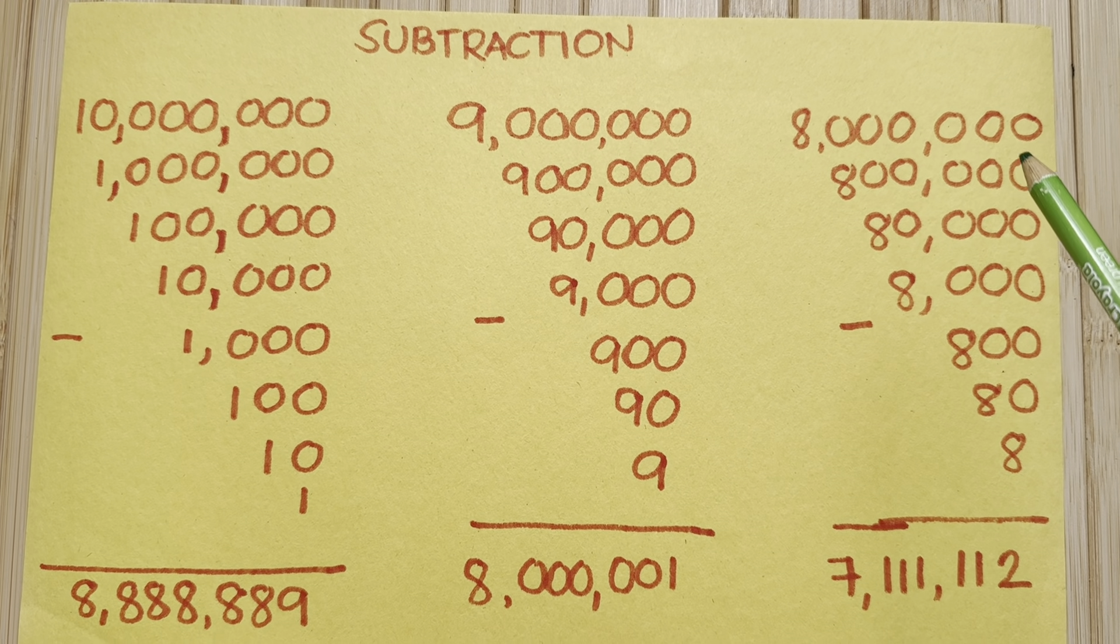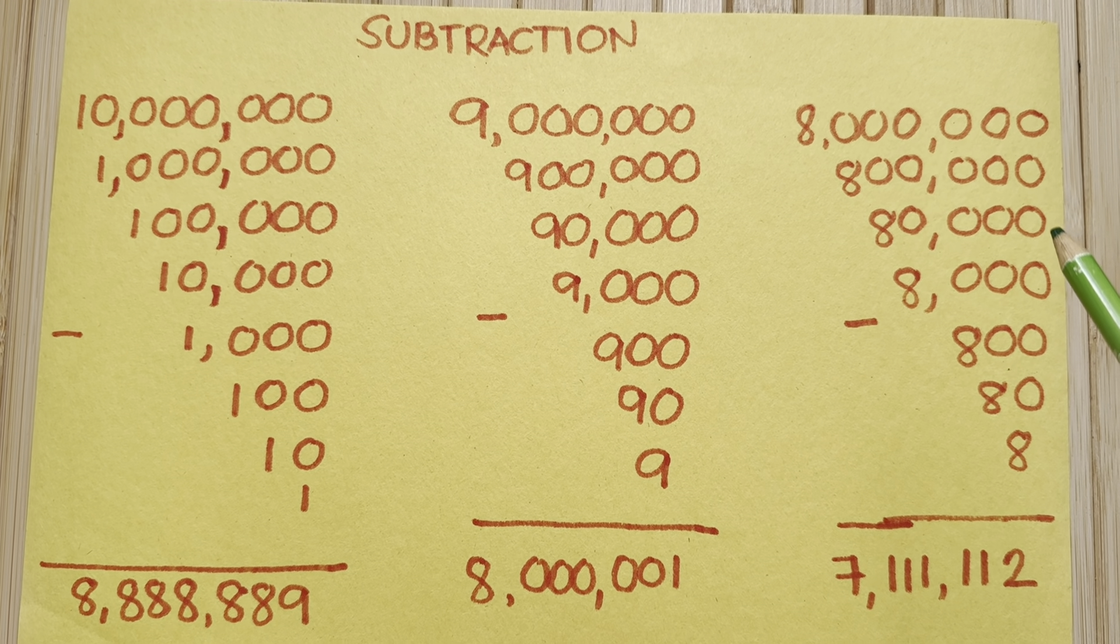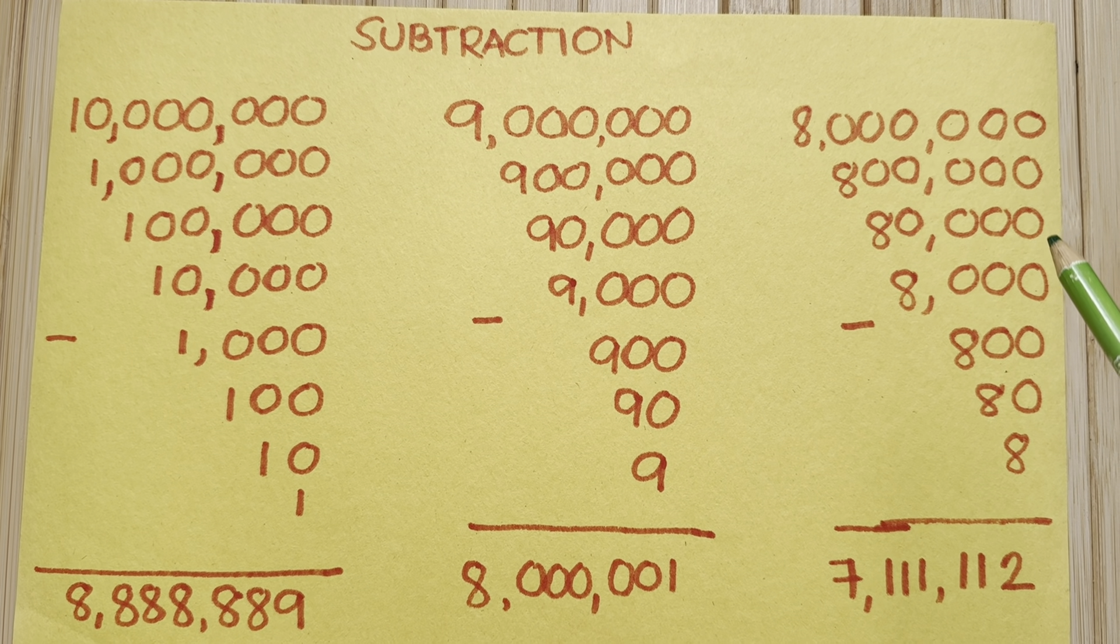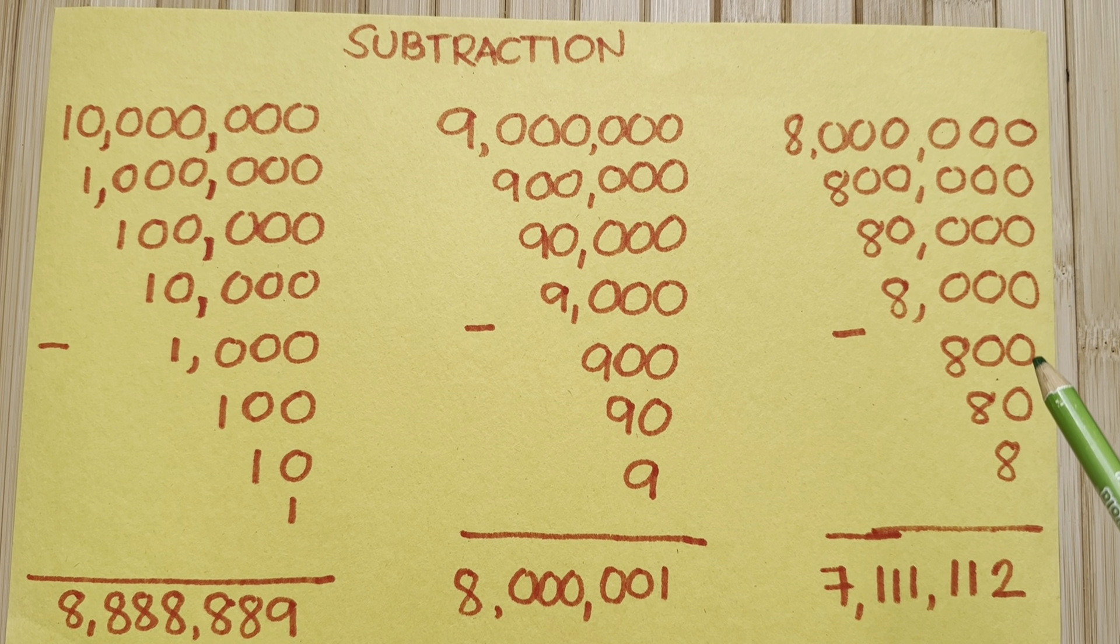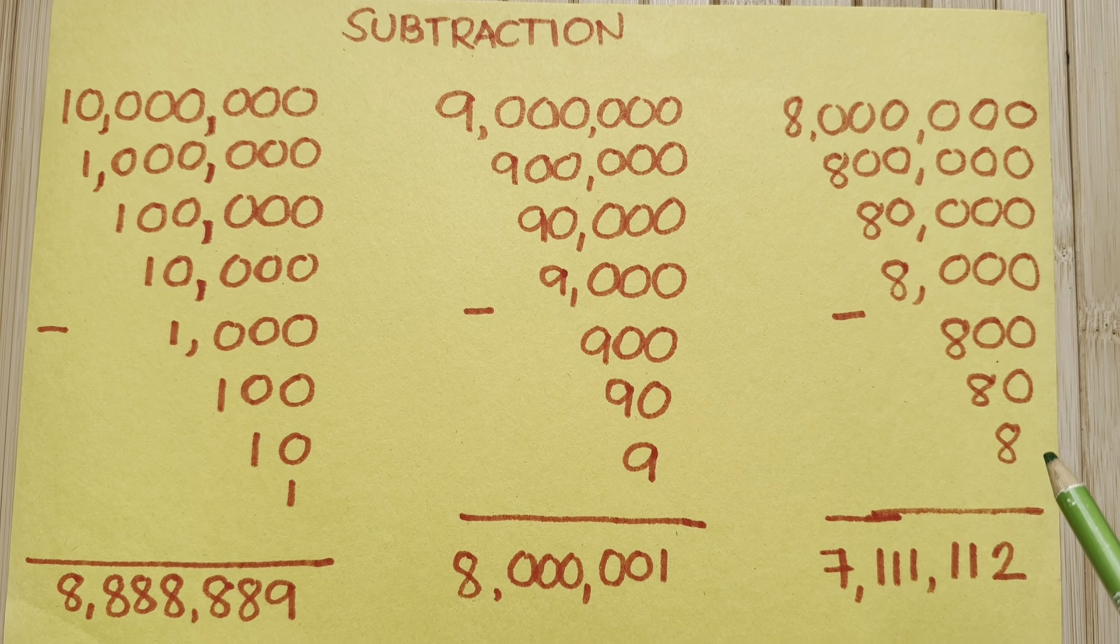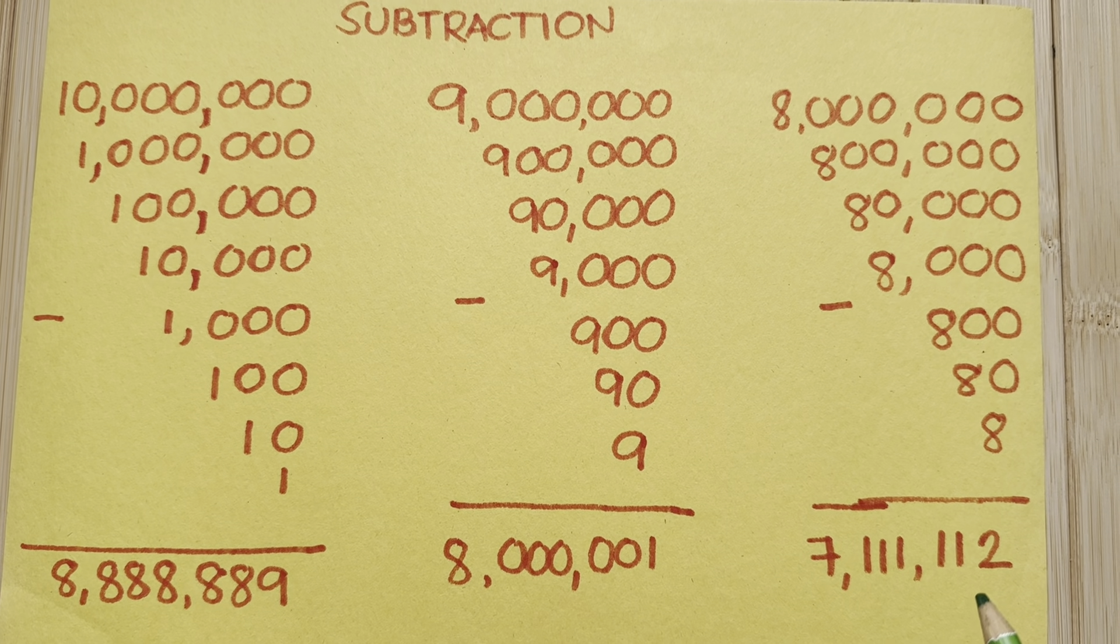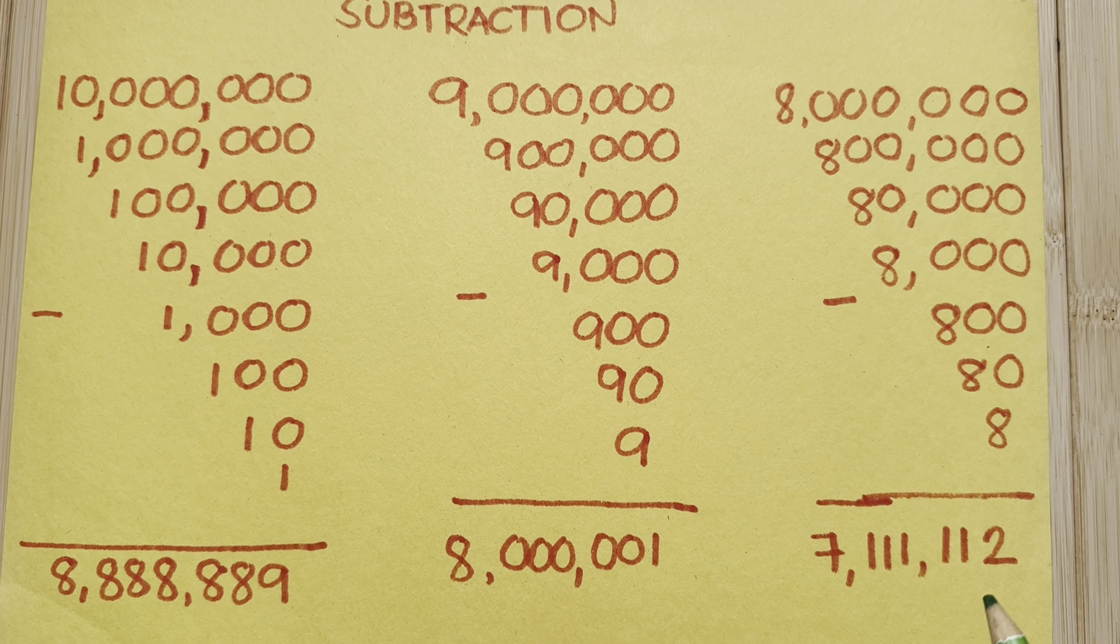8 million minus 800,000 minus 80,000 minus 8,000 minus 800 minus 80 minus 8 equals 7,111,112.